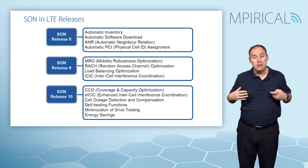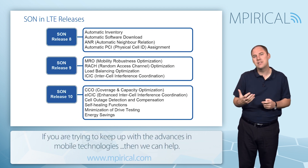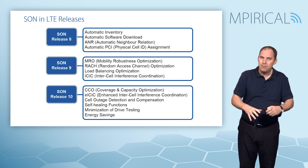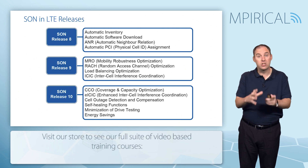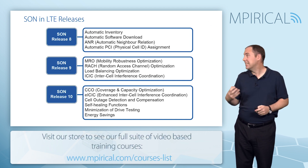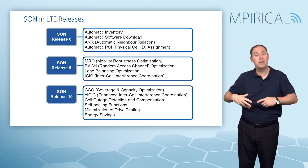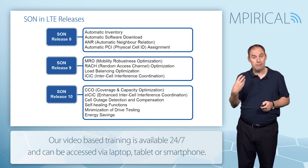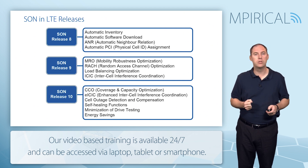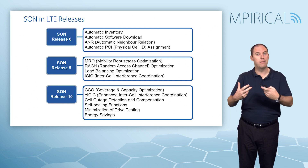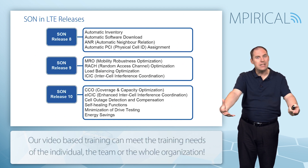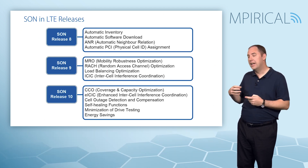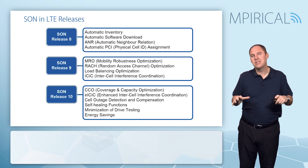Moving into Release 10, many more features are introduced. Coverage and capacity optimization ensures the right network footprint and manages system capacity. ICIC is further enhanced. Cell outage detection and compensation allows surrounding cells to manage the loss of a cell or site and continue serving users. Self-healing addresses cell outages, board failures, and software issues. Minimization of Drive Tests (MDT) empowers handsets to feed back network information, effectively turning the general public into network monitors to support optimization. Energy savings allow unused cells to be switched off to reduce costs.